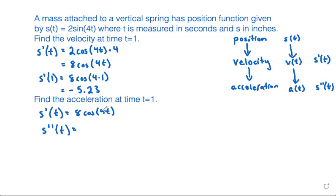Again, we have a chain rule. The derivative of the outside function: the derivative of cosine is negative sine, so we have 8(-sin(4t)). Then multiply by the derivative of the inside function, which is 4. Simplifying: 4 times 8 is 32, so we get -32sin(4t).